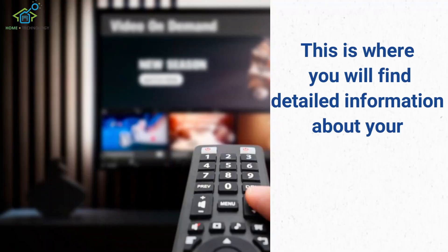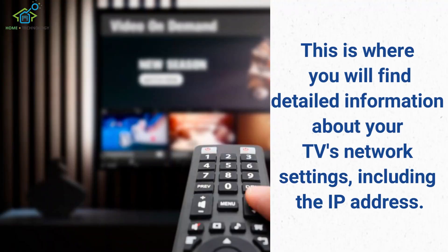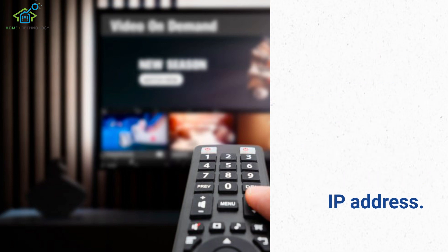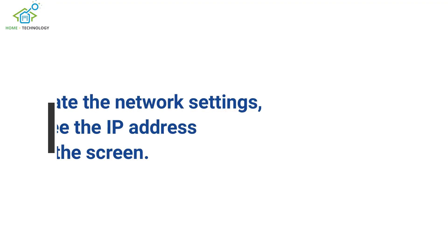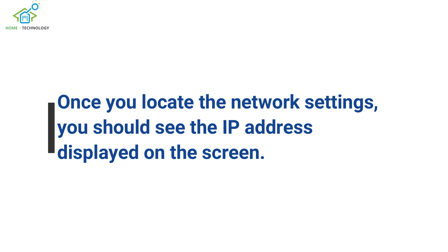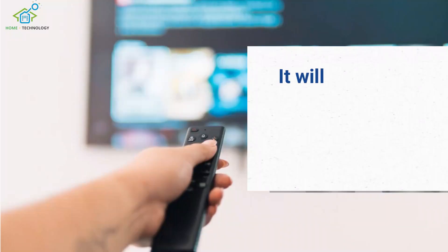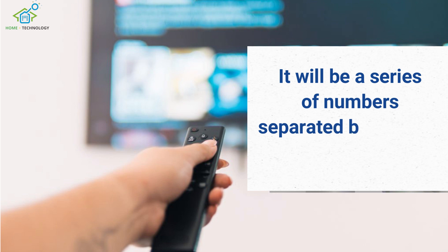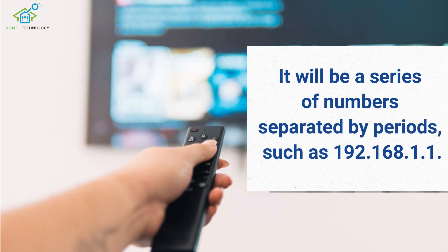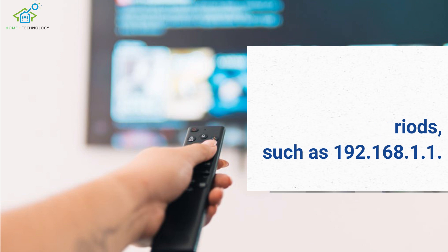This is where you will find detailed information about your TV's network settings, including the IP address. Once you locate the network settings, you should see the IP address displayed on the screen. It will be a series of numbers separated by periods, such as 192.168.1.1.